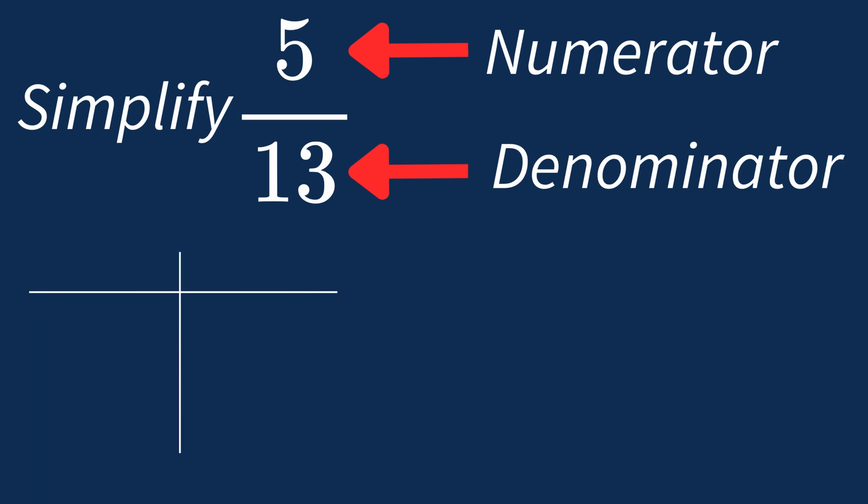First, let's list out the factors for each. For 5, the factors are 1 and 5.